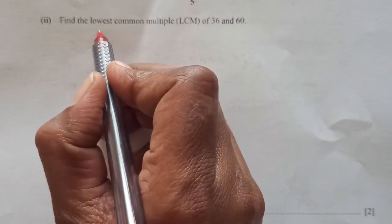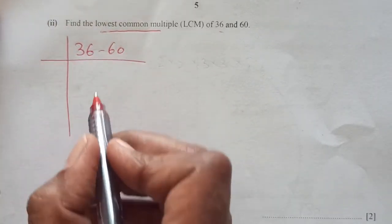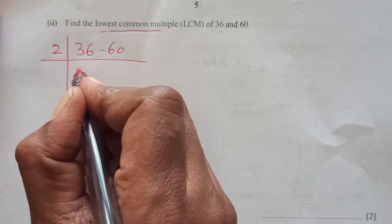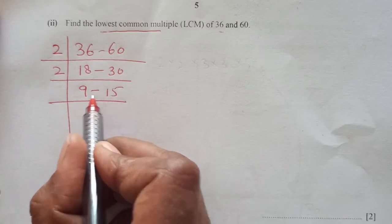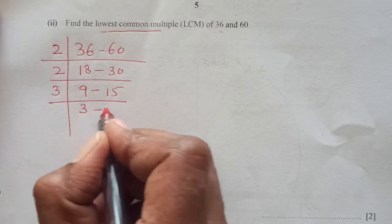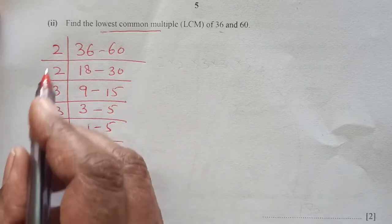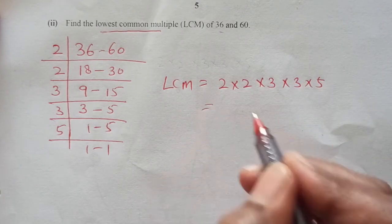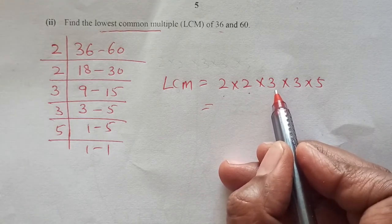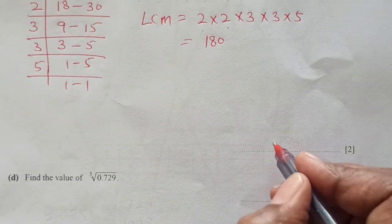Part 2: Find the lowest common multiple (LCM) of 36 and 60. Using prime factorisation by dividing both numbers simultaneously by primes: 2, 2, then 3, giving factors 2, 2, 3, 3, 5. LCM = 2 × 2 × 3 × 3 × 5 = 4 × 9 × 5 = 180.